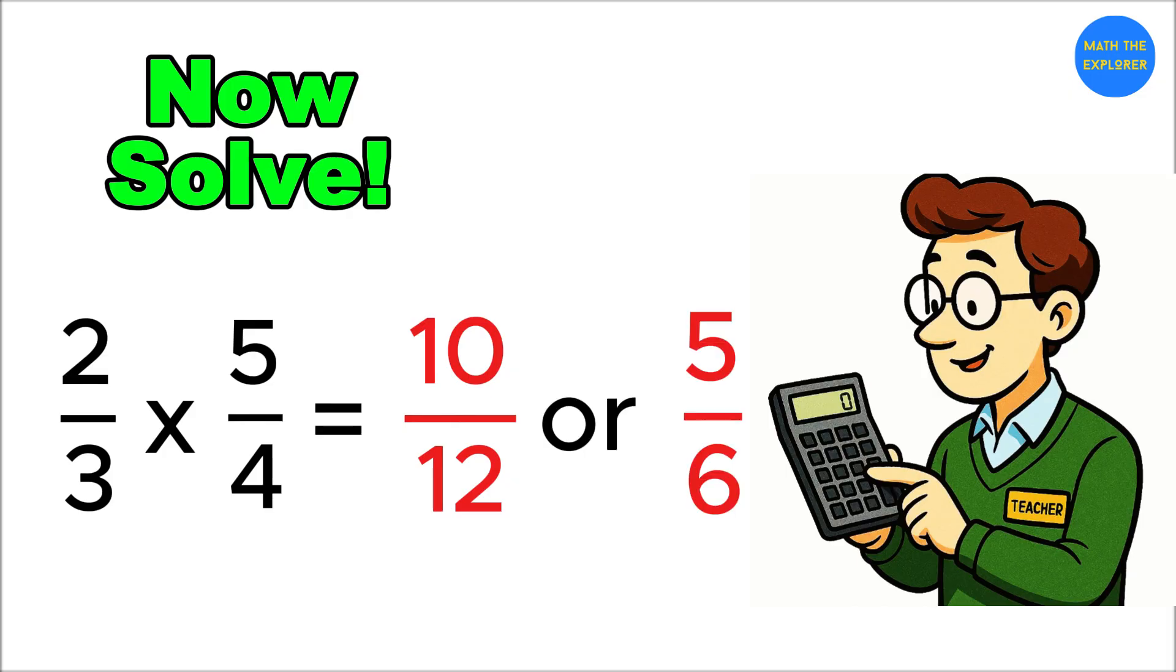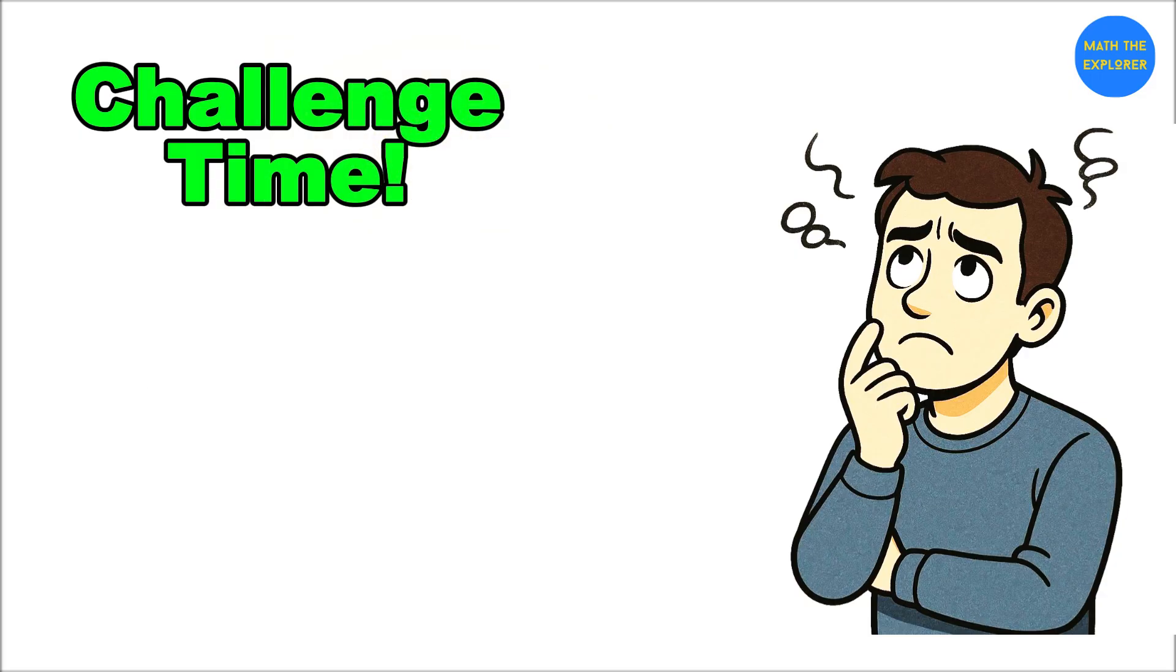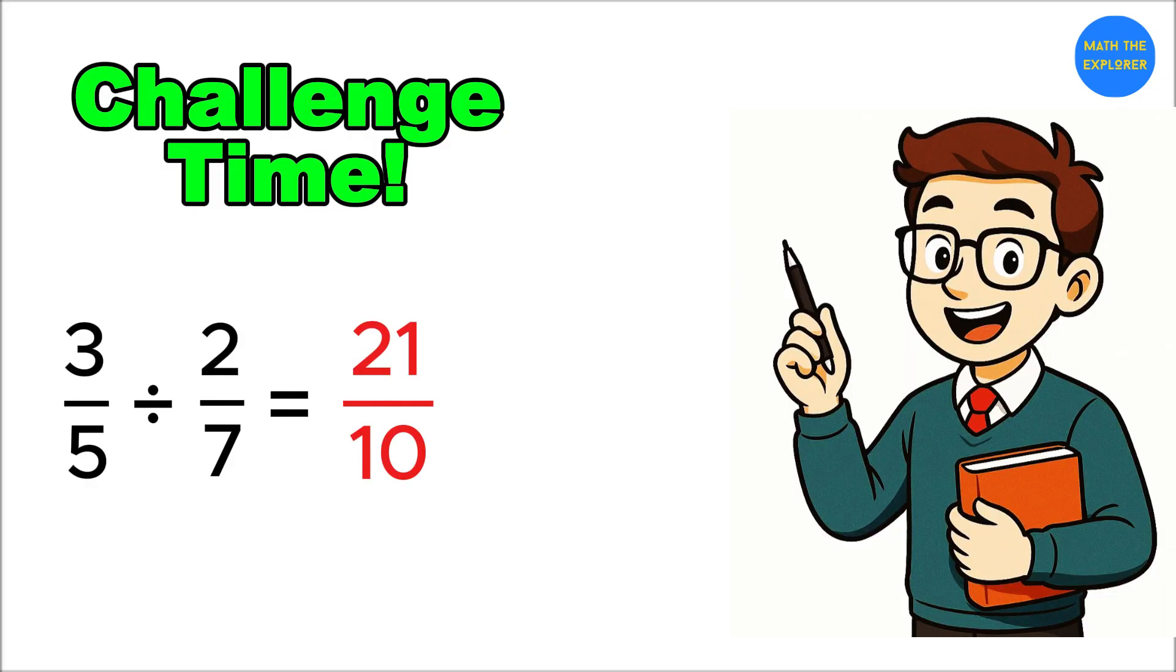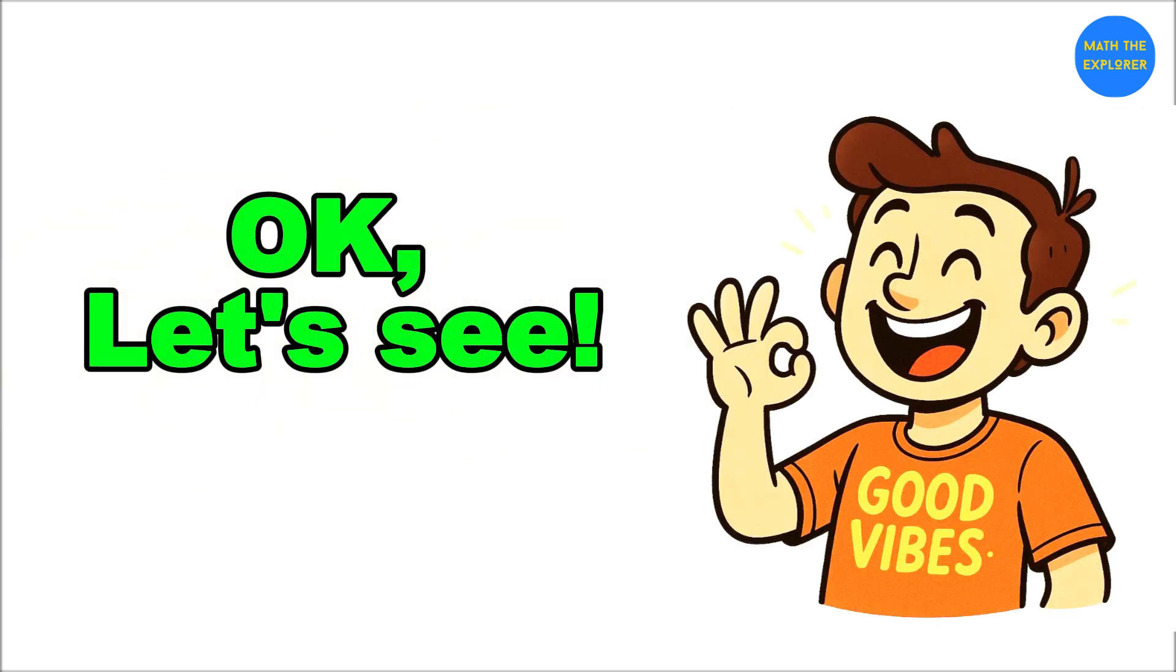Answer: 3/5 × 7/2 = 21/10, or 2 and 1/10. Okay, let's see if you're really paying attention. I'll give you three quick problems and you have to comment your answers below. Ready?